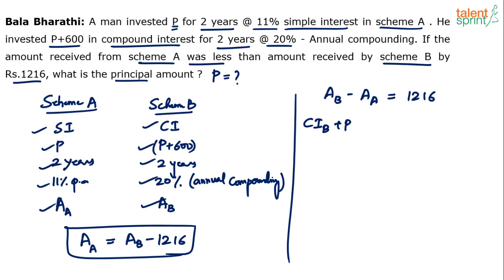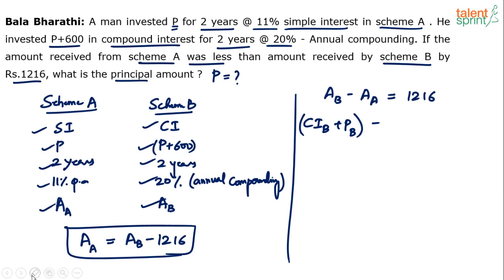So: compound interest of B plus principal of B, minus simple interest of A plus principal of A, equals 12.16. Note that A is a simple interest case, not compound interest.